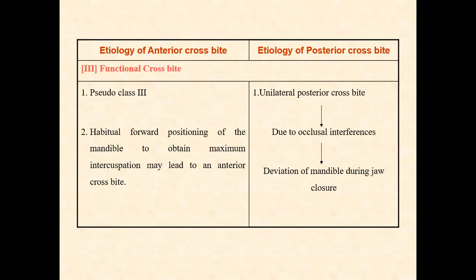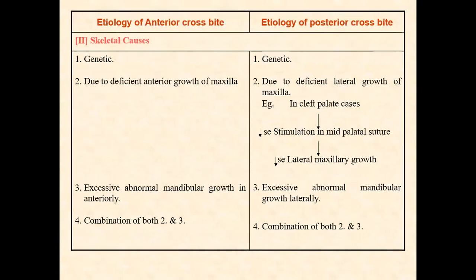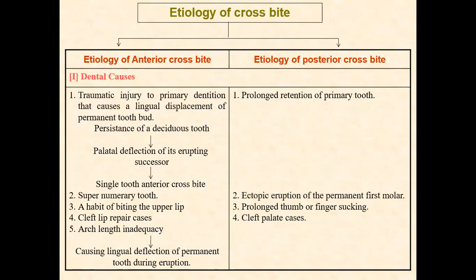Next is functional cross bite, also called pseudo Class III cross bite. This occurs due to habitual forward positioning of the mandible. For example, if a child loses primary teeth early, to attain maximum intercuspation they move the mandible forward. This habitual forward positioning to obtain maximum intercuspation may lead to an anterior cross bite — a functional cross bite developed to perform the function.